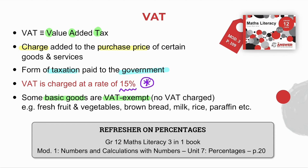Examples of VAT exempt goods include fresh fruit and vegetables, brown bread, milk, rice, paraffin, and so on. Should you want a refresher on percentages — since we'll be working with 15% a lot — you're welcome to go to your Grade 12 Maths Literacy 3-in-1 book, where you will find percentages on page 20.